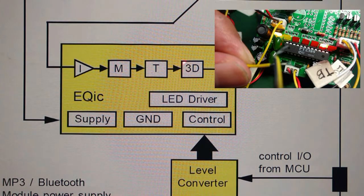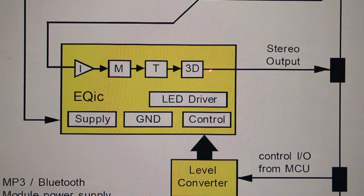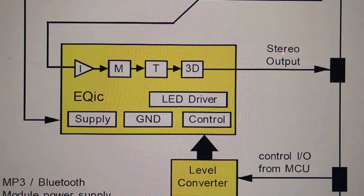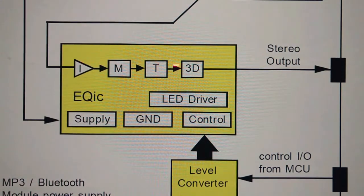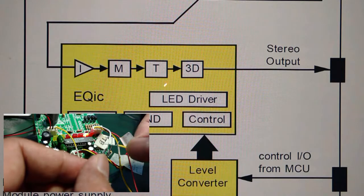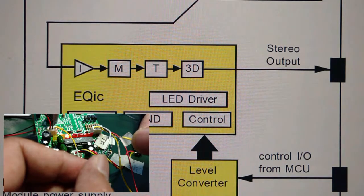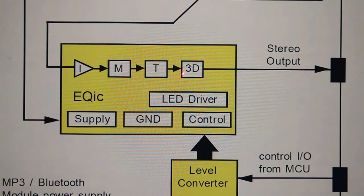After the mood block is the turbo bass, which is responsible for enhancing the low frequencies of the audio spectrum. And after that we have the 3D sound. After the 3D sound we have the audio output, which is also stereo left and right. Also internally in the EQIC solution we have the LED driver, which is responsible for driving the LEDs for the different mood, turbo bass, and 3D sound functions.